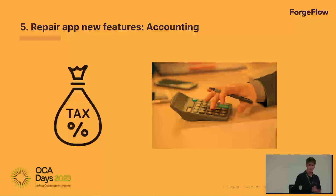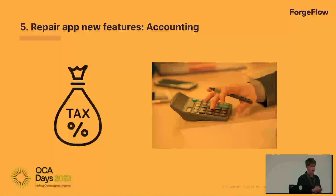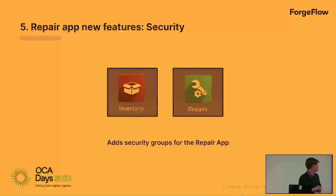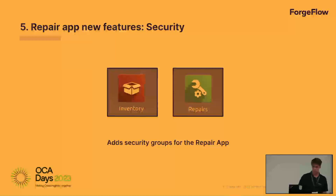As mentioned for the RMAs, we also introduced a model for repairs that relates repair orders with journal items to help accountants with stock valuation for companies using real-time inventory valuation. Last but not least, we noticed that stock users could also access the repair app, which should not happen. So we created a model that adds security groups exclusive to the repair app, ensuring proper access control.